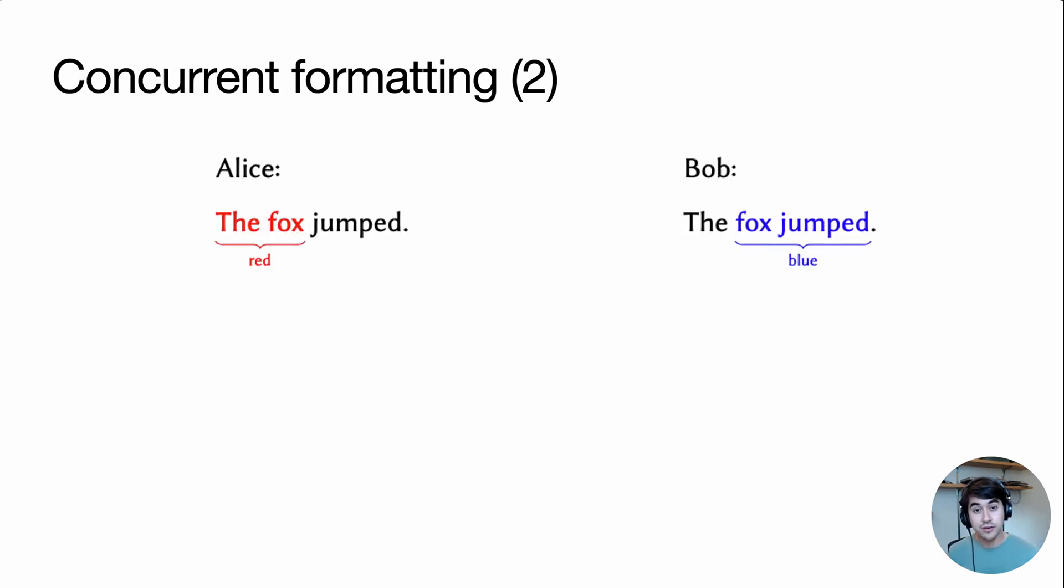Now let's consider another example of concurrent formatting. In this case, Alice sets these words to red and Bob sets these words to blue. The problem is, when we merge now, we can't set the middle word fox to be both red and blue. We propose that the best solution here is just to pick one of those colors arbitrarily as the color for the overlapping word. Our paper has more examples like this to illustrate our proposed specification for intent preservation in rich text editing.